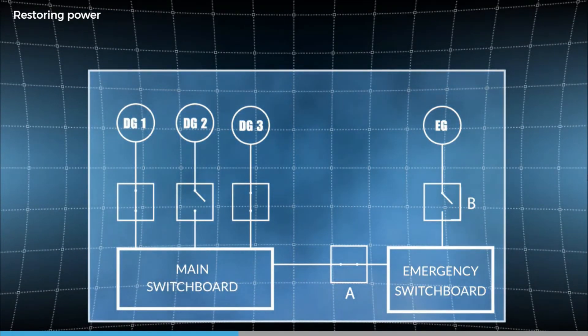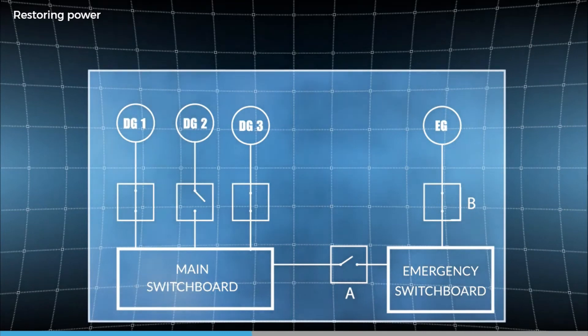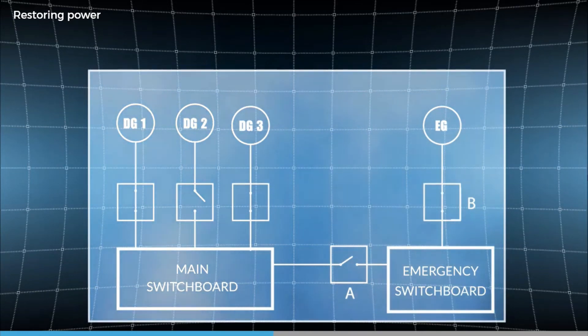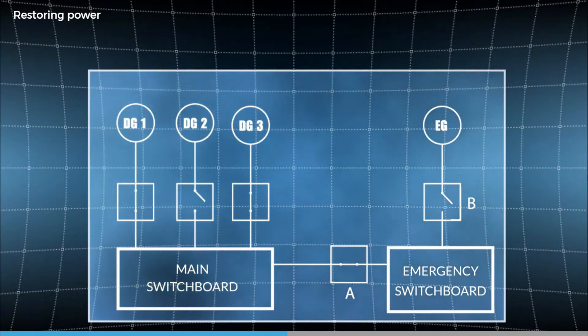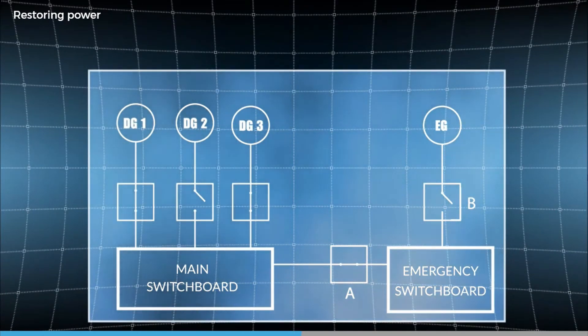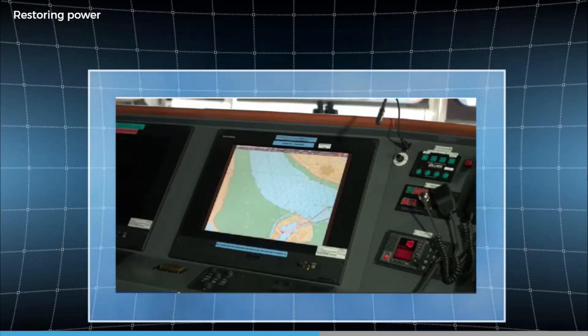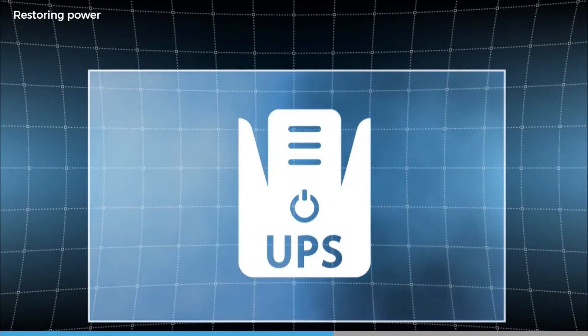If we can synchronise them, great. If we can't, then keep in mind that there might be a momentary loss of supplies to anything fed from the emergency switchboard. So know what this affects since it could potentially cause another blackout. For instance, if it is supplying power to the main generator fuel pump.